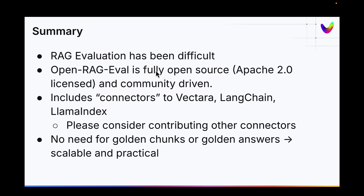I encourage you to take a look at this — it's a very powerful package that can help you optimize and tune your RAG pipeline. It's open source, so all the source is open and you can see how it works. This drives a lot of transparency, so the metrics are very clear in how they work. It includes connectors for Vectara, LangChain, and LlamaIndex. But if you have your own RAG pipeline or another one you want to contribute, we are very much in favor of contributions via issues or PRs for other connectors. Let us know if you have any questions. Thank you for listening.